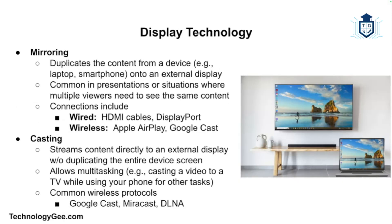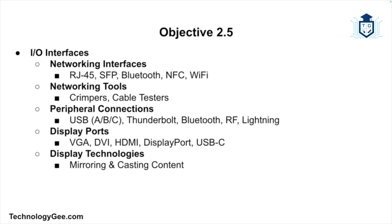Display technology methods include mirroring and casting. Mirroring is when the content of a device's screen, like a laptop or smartphone, is duplicated on an external display. This is common for presentations where multiple viewers need to see the same content, and connections for mirroring include HDMI cables, DisplayPort, or wireless methods like Apple AirPlay or Google Cast. Casting differs from mirroring in that it allows you to stream content directly to an external device without duplicating the screen — for example, casting a video to a smart TV while continuing to use your phone for other tasks. Casting is done wirelessly using protocols like Google Cast, Miracast, or DLNA.